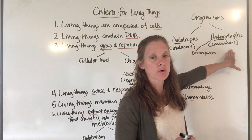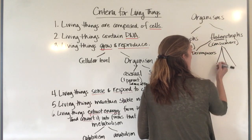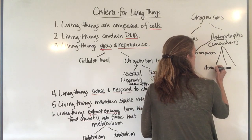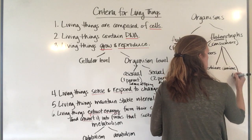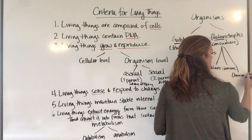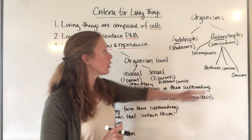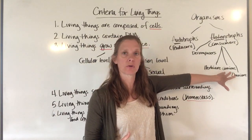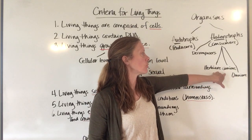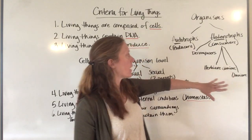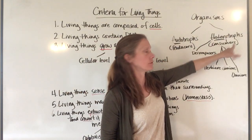Consumers fall into three categories: herbivores, which eat only plants; carnivores, which eat only other creatures; and omnivores, which eat both plants and other creatures. So alongside consumers, remember we also have the decomposer category as part of the heterotrophs.